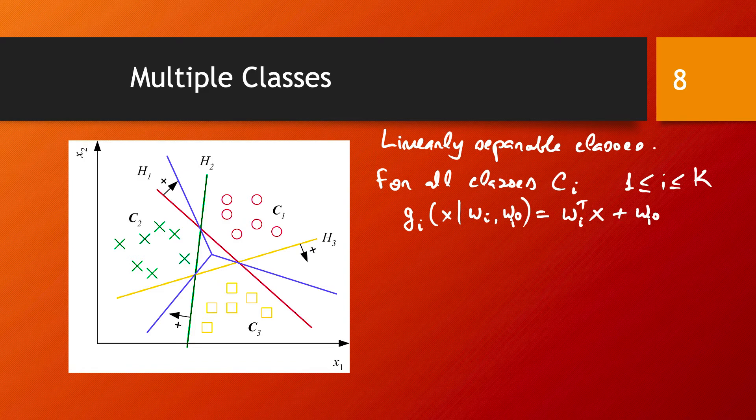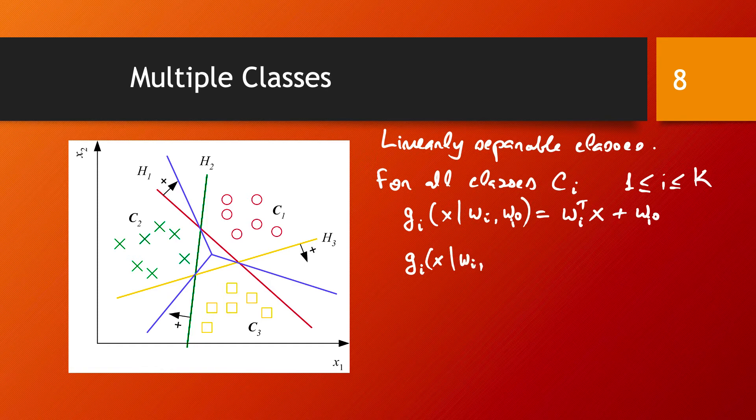And we aim to choose this K discriminant function in such a way that gi of x given these parameters wi and wi0,